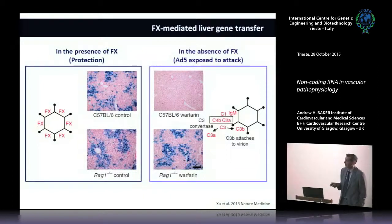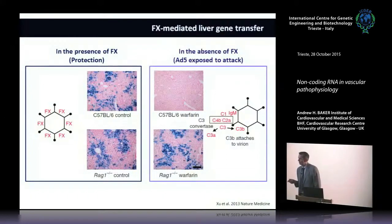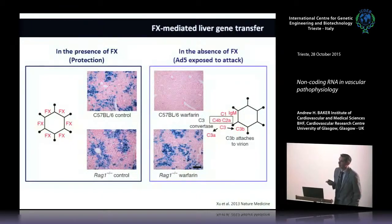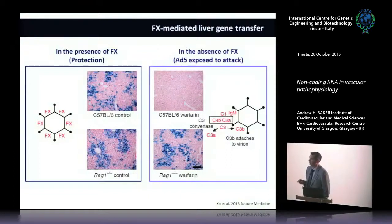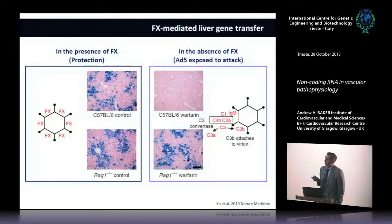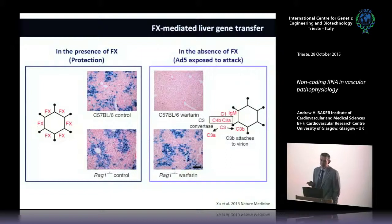The story was extended by Andrew Burns's group in Nature Medicine, where a postdoc accidentally injected virus into an immune-deficient mouse and found something else going on. In immune-competent mice, removing the ability to bind factor X eliminates liver gene transfer; in immune-deficient mice it doesn't. These immune-deficient mice lack IgM, so the virus becomes susceptible to neutralization by an IgM-initiated complement cascade. Factor X thus serves a dual role: mediating gene transfer to the liver and protecting the virus from immune attack.